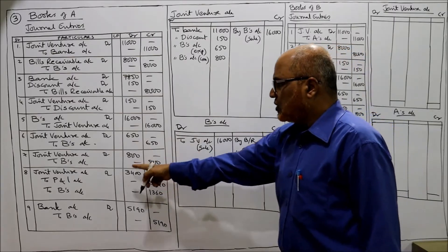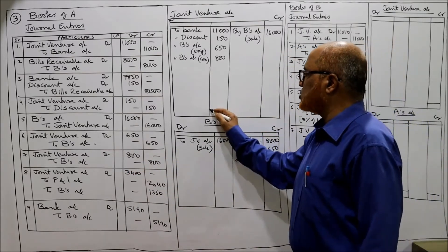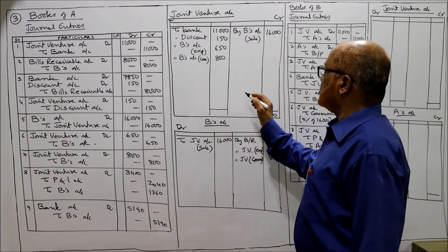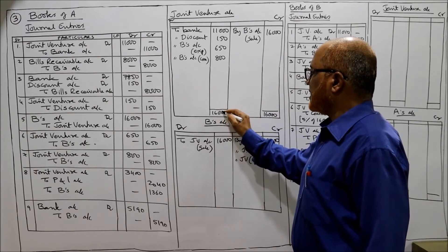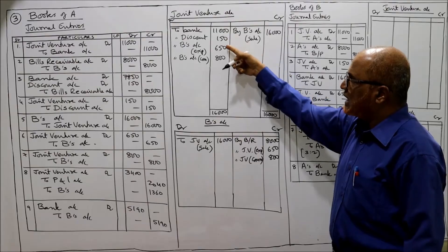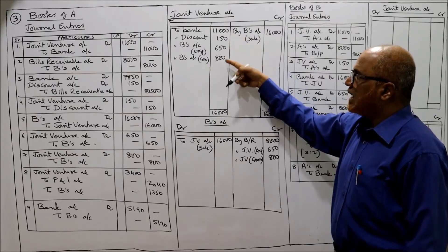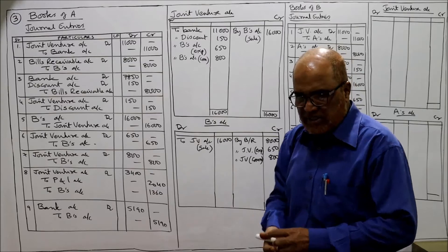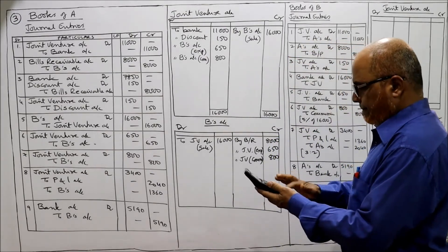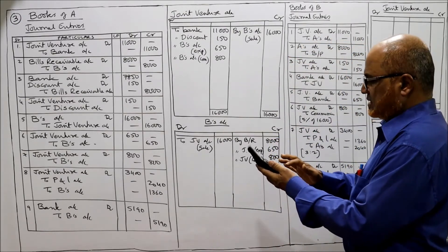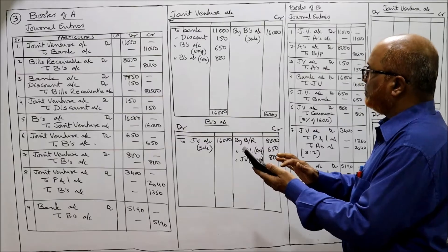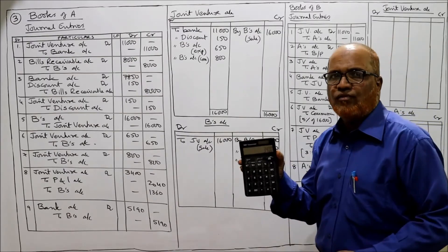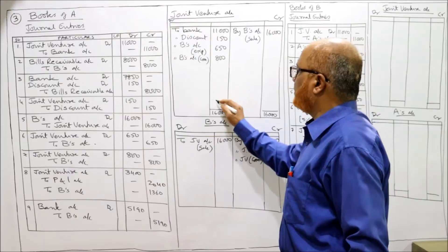Now we find out the profit or loss on joint venture. Credit side is 16,000. From 16,000 if you deduct all items: 16,000 minus 11,000 minus 150 minus 650 minus 800, you get 3,400. So 3,400 is the profit.